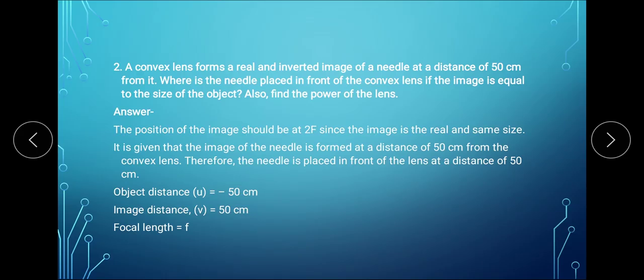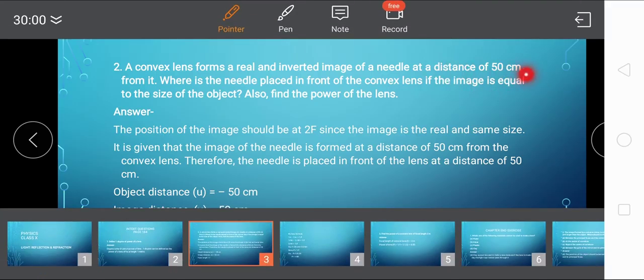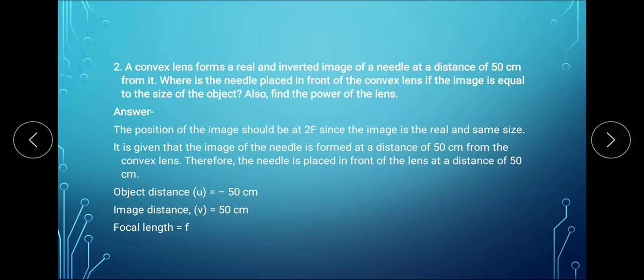Question 2 says: a convex lens forms a real and inverted image of a needle at a distance of 50 cm from it. Where is the needle placed in front of the convex lens if the image is equal to the size of the object? Also, find the power of the lens. In the question it is given that the image of the needle is formed at a distance of 50 cm from it, and the size of the image is equal to the size of the object.